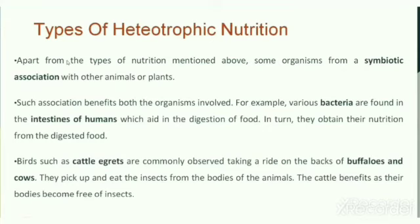Apart from the types of nutrition mentioned, some organisms form a symbiotic association with other animals or plants. Such associations benefit both organisms involved. For example, various bacteria are found in the intestine of humans which aid in the digestion of food; in turn, they obtain their nutrition from the digested food. Birds such as cattle egrets are commonly observed riding on the backs of buffaloes and cows; they pick up and eat the insects from the bodies of these animals, and the cattle benefits as their bodies become free of insects.